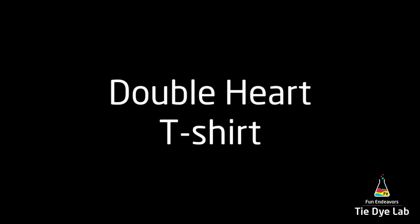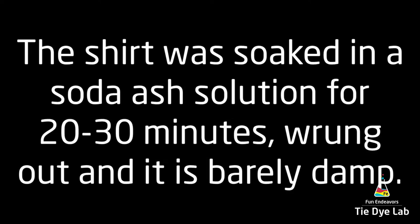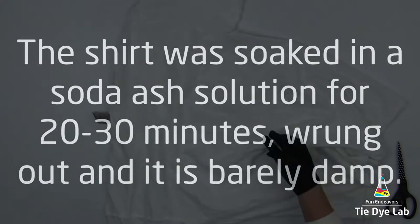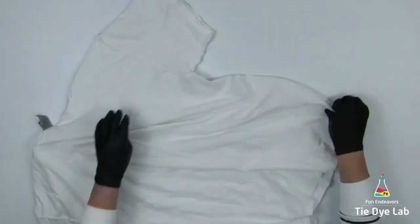The shirt was washed and dried, soaked in a soda ash solution for at least 20 to 30 minutes. I spun it out of my panda spin dryer so it's just barely damp. I also have it turned inside out.